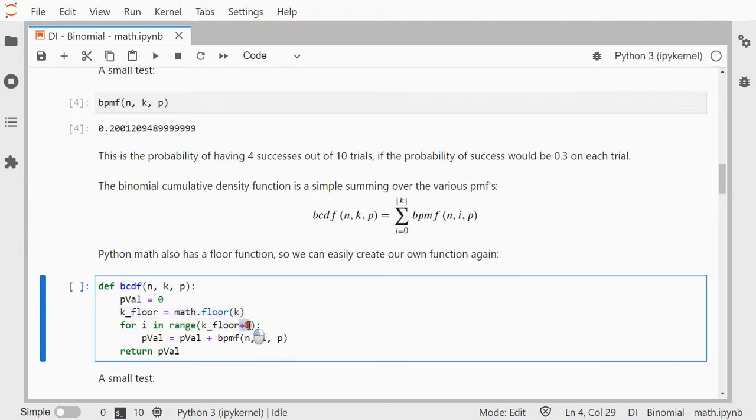I add one because the range is excluding the upper limit, so that's why I add one because it does need to do that k value itself as well. It then simply keeps on adding that binomial probability mass function and it returns nicely our p value.